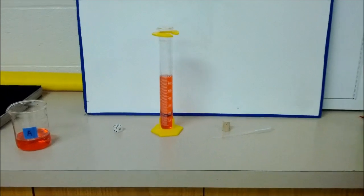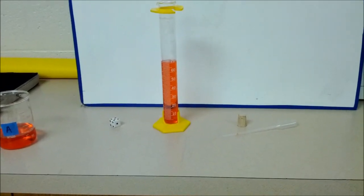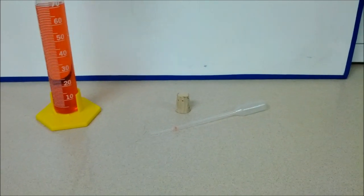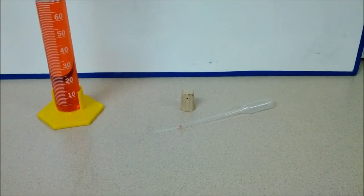So the volume of our number cube is 3 milliliters. And that's how we find volume of an object through displacement. Thank you, ladies. Okay, this time we're going to find the volume of an object that will float. In other words, it is not as dense as water.